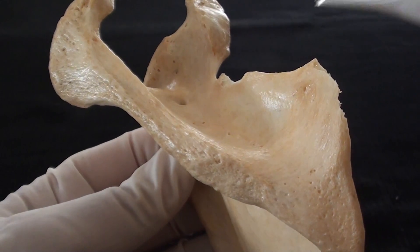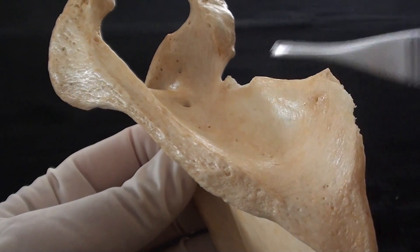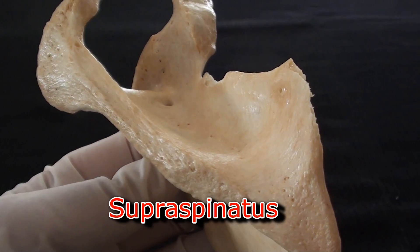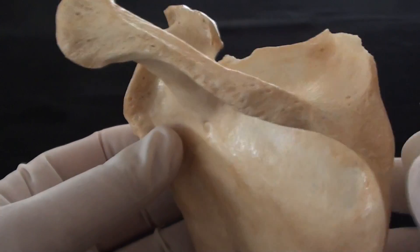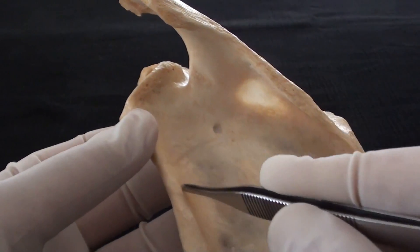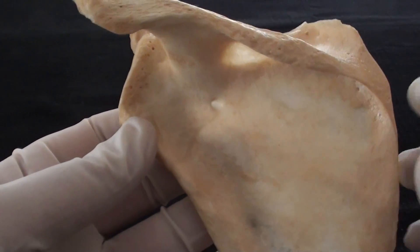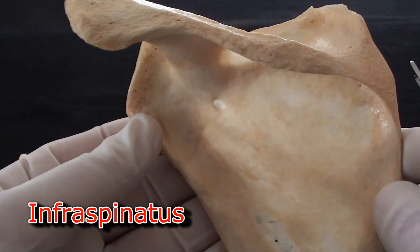The supraspinous fossa contains practically the same name muscle. The name of the muscle is supraspinatus whereas infraspinous fossa is going to host attachment of also large and important muscle that is known as the infraspinatus.